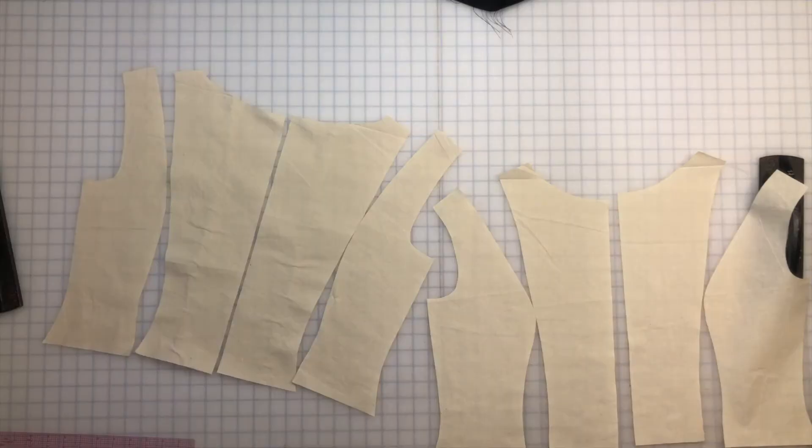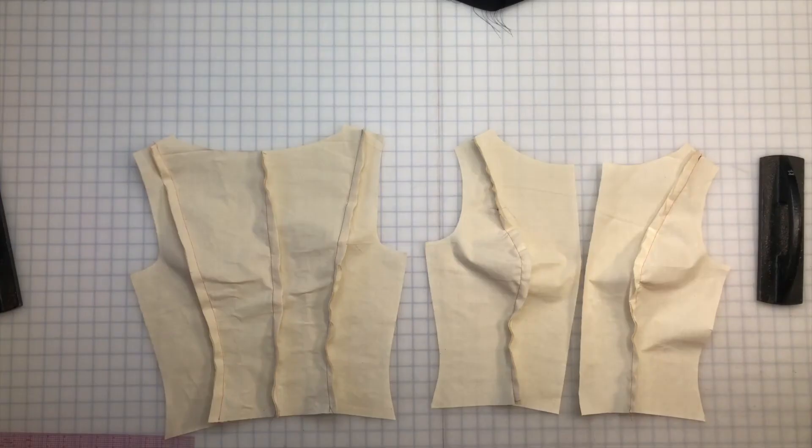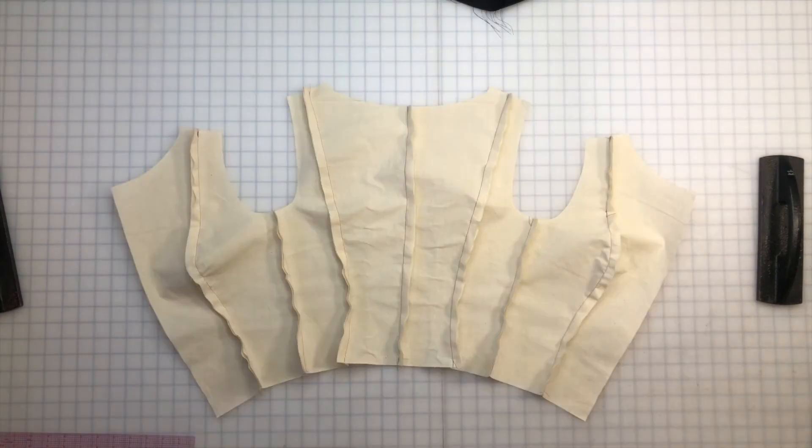I cut out those pieces and now I can sew them together at the princess seams, side seams, and center back. Then I press the seams open.